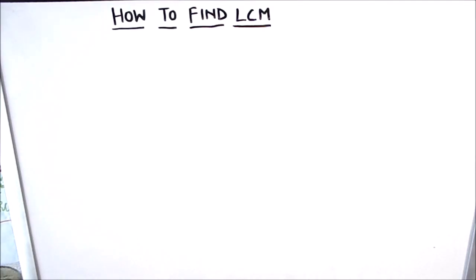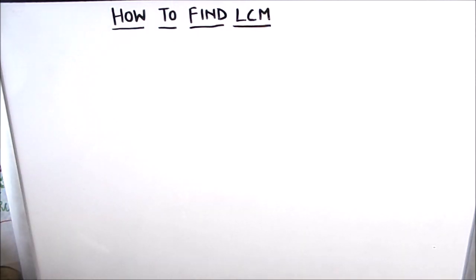Hello students! Today in this video we are going to learn how to find the LCM. We will be covering a few examples of finding the LCM of two and three numbers. LCM, as the name suggests, is the Least Common Multiple — that means it is the least common multiple of all the numbers of which we are finding the LCM.